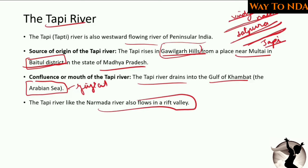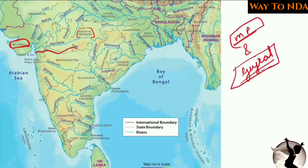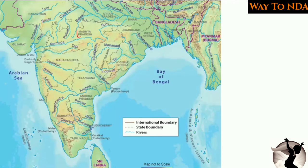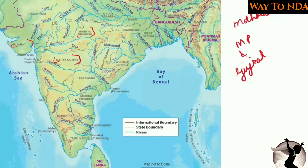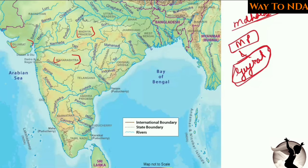The states through which the Tapi river flows are Madhya Pradesh, Maharashtra, and Gujarat. This is important and has come up in exams before — remember the course of the river and through which states it is flowing.